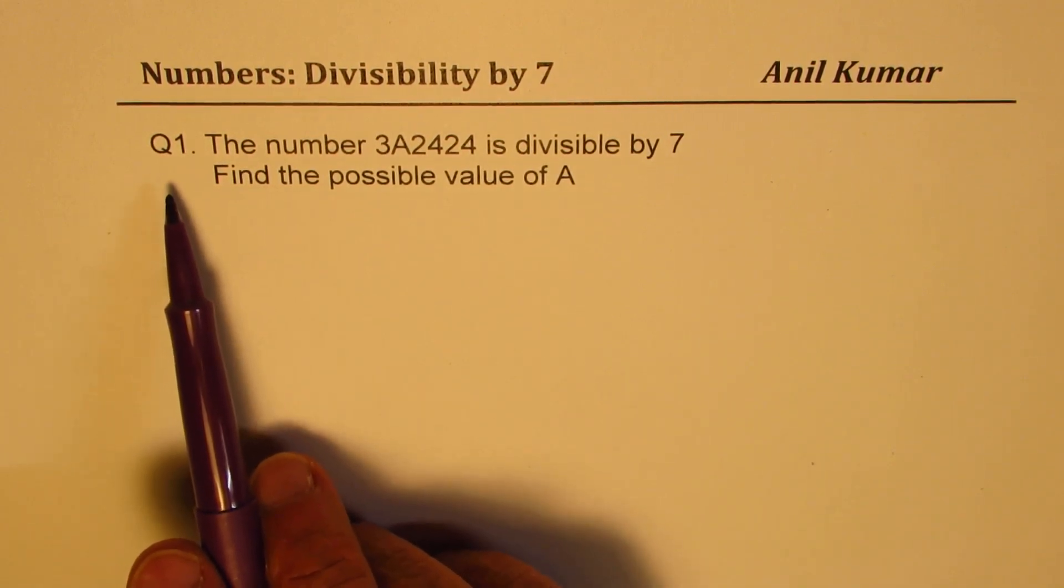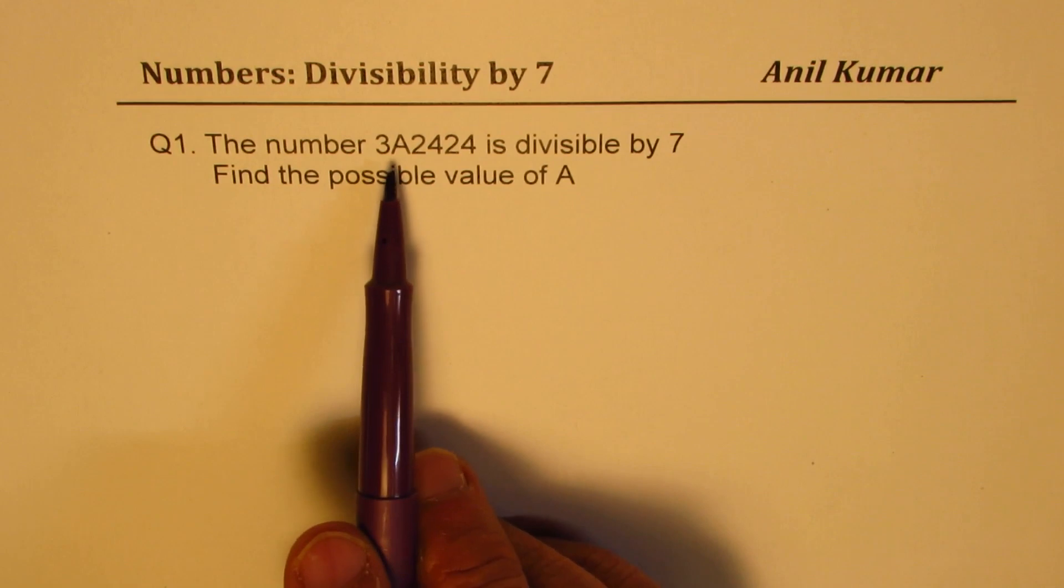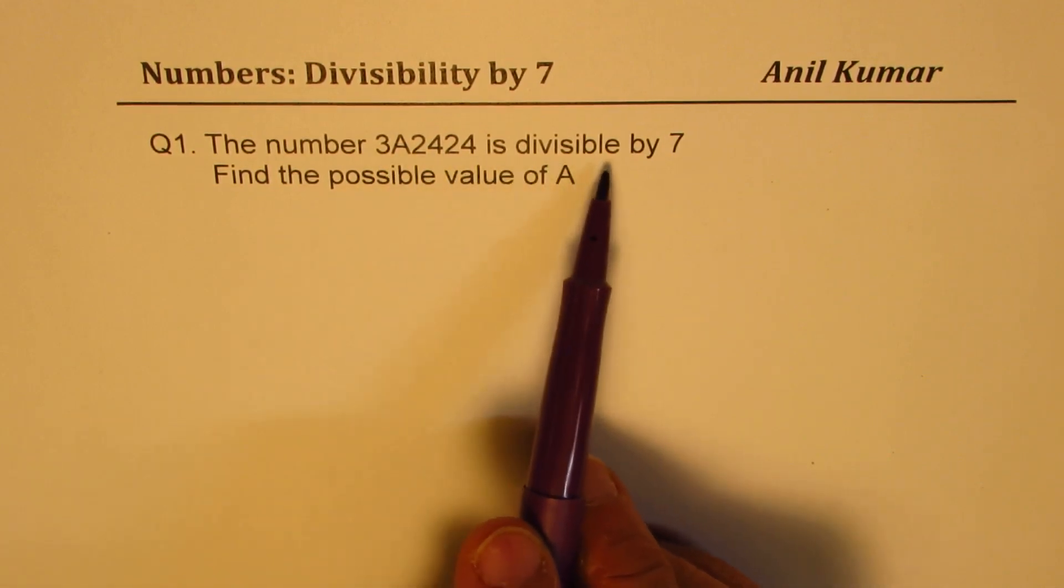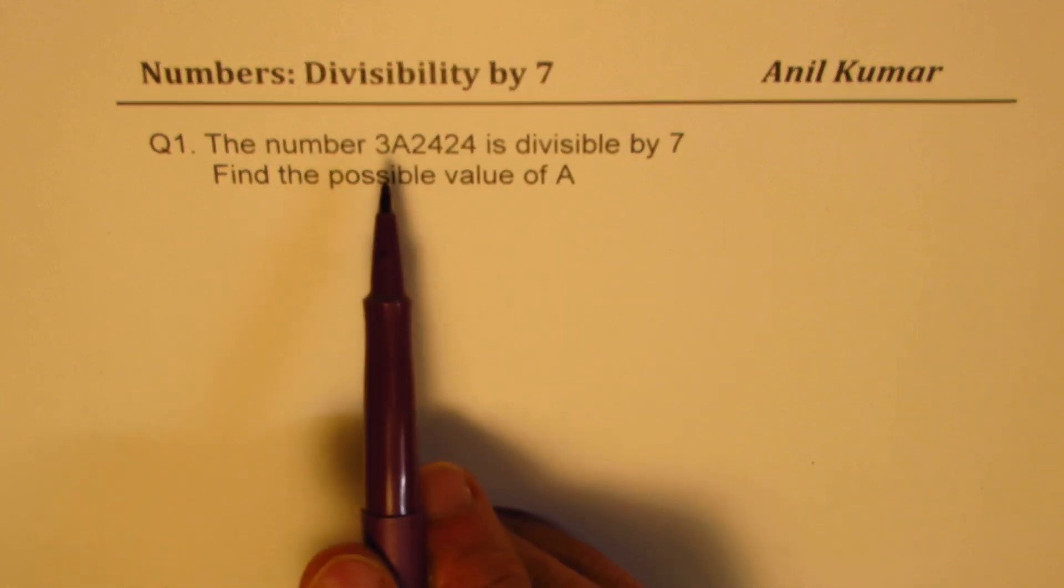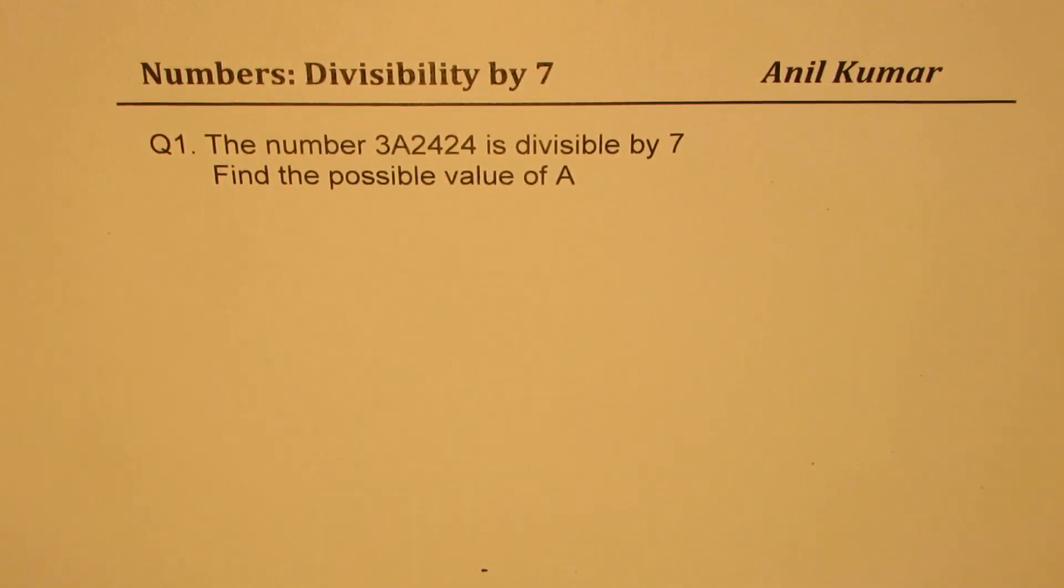The question here is, the number 3A2424 is divisible by 7, find possible value of A. So that is the question for you. Now let us see how to solve such question.